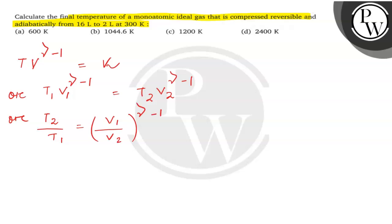For a monoatomic gas, gamma will be equal to Cp upon Cv. Cp will be 5 upon 2R and Cv will be 3 upon 2R.